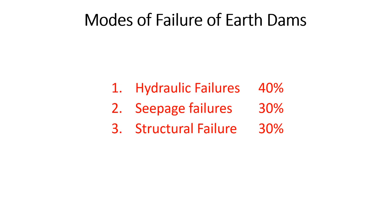Let's move on to the modes of failure of earthen dams. Basically, there are three different types of failures: hydraulic failure, seepage failure, and structural failure. From statistics, it is very clear that 40% of failures of earthen dams are due to hydraulic failures, while seepage failure accounts for 30% and structural failure also accounts for 30%.